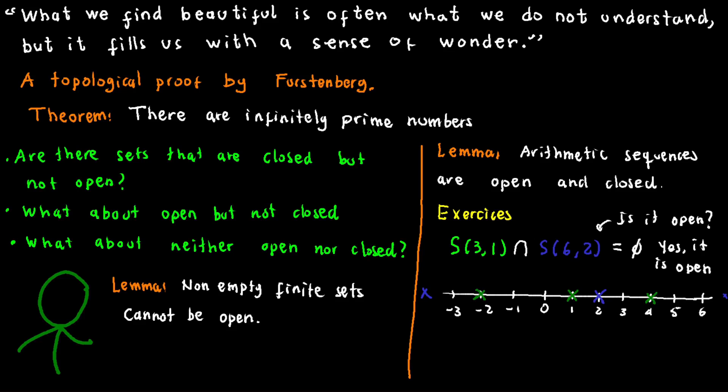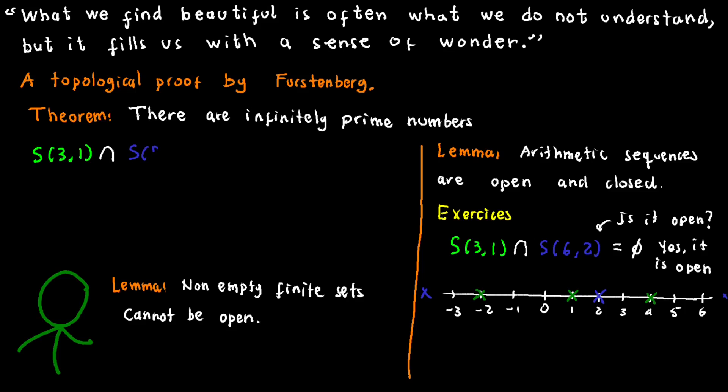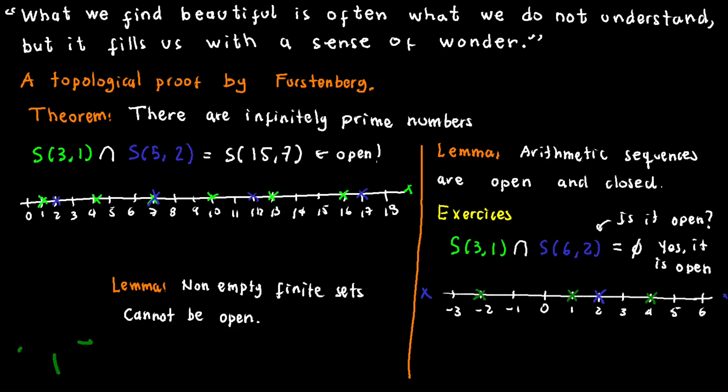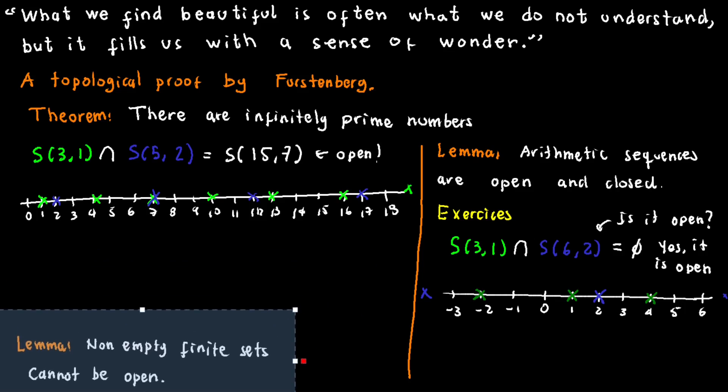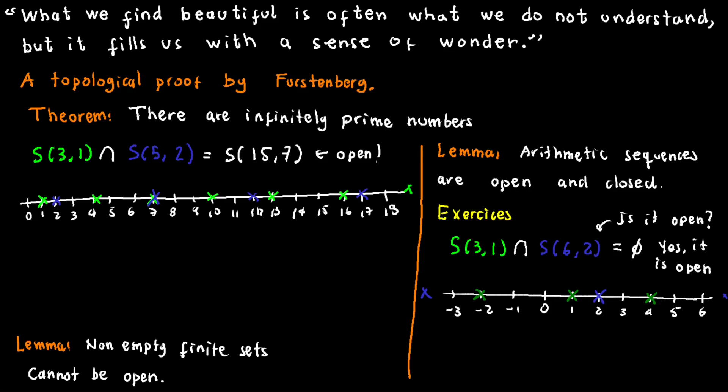Let's try some other example. What about the intersection of S(3,1) and S(5,2)? Is it open? Upon closer inspection, we notice that the intersection is indeed an arithmetic sequence in itself, namely S(15,7), which by definition is also open.